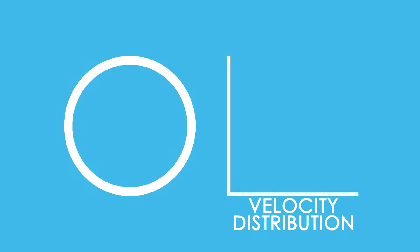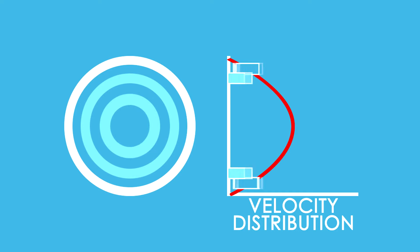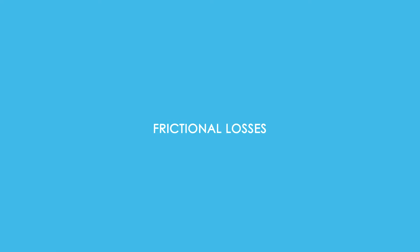The velocity profile in a pipe will show that the fluid elements in the center of the pipe will move at higher speed than those closer to the wall. Therefore, friction will occur between layers within the fluid.